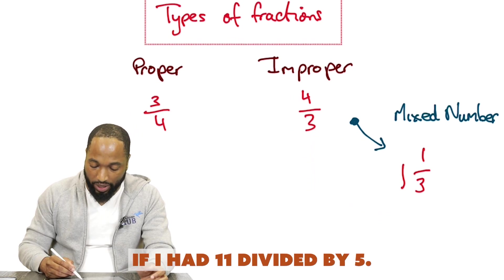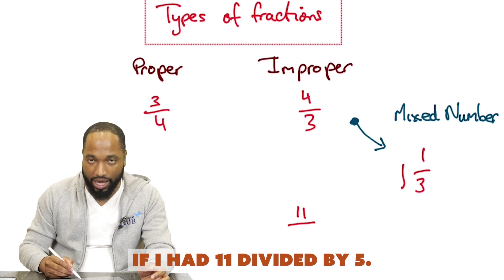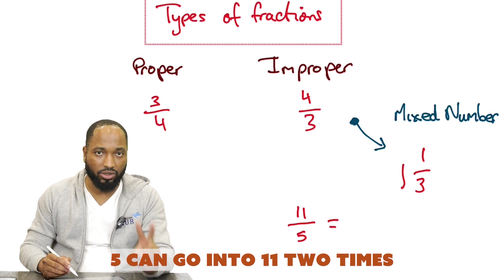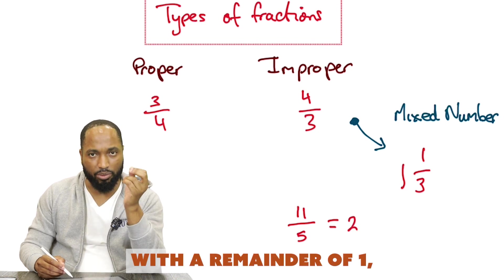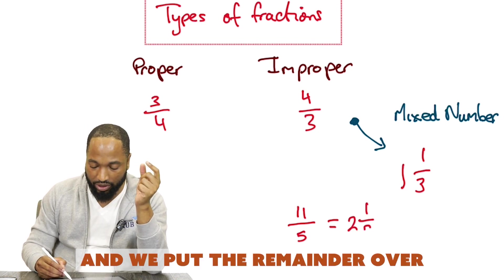Let's just do one more. If I had 11 divided by 5, 5 can go into 11 two times with a remainder of 1, and we put the remainder over the divisor.